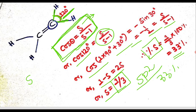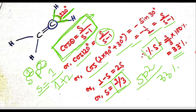So in an sp2 hybridized bond, the percent S character is 33%. We can also verify this another way: sp2 means 1 S and 2 P, so the fraction of S = 1 / (1 + 2) = 1/3. This is the same result, confirming the formula is correctly applied.